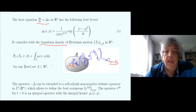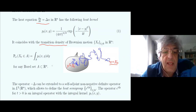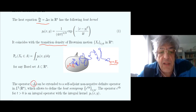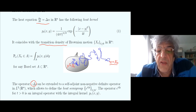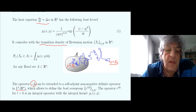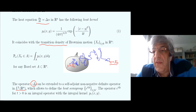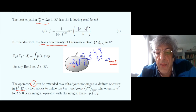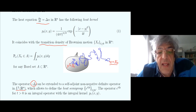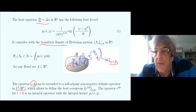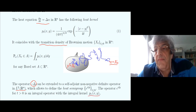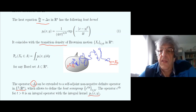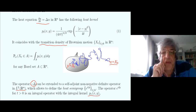The heat kernel also equals the transition density of Brownian motion in Rn: the probability of getting from initial point x to some subset A of Rn is obtained by integrating the heat kernel with respect to y. The minus Laplace operator — the positive definite Laplacian — can be extended to a self-adjoint non-negative definite operator in L2, which allows, by means of functional calculus, defining the operator e^{tΔ}, giving a family of bounded operators called the heat semigroup. The integral kernel of this semigroup is exactly the heat kernel.